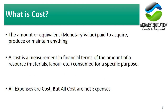First of all, what is cost? The amount or equivalent in monetary value paid to acquire, produce, or maintain anything is called cost. For example, the amount I paid to purchase my computer — that's the cost. A cost is a measurement in financial terms of the amount of resources — material, labor, or other inputs — consumed for a specific purpose.